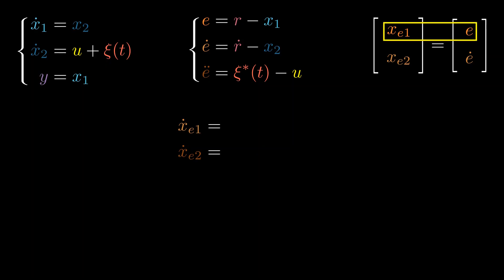Since xe1 is the error, its derivative is the derivative of the error signal, which, as we know from the second equation, is equal to xe2. Following the same logic, the derivative of xe2 is equal to the second derivative of the error signal. Let's now substitute it as well. This is how we arrive at the error dynamics in terms of the new state vector xe.